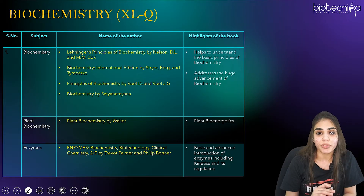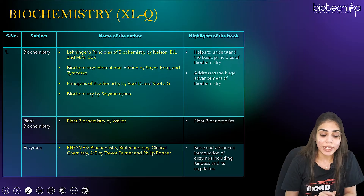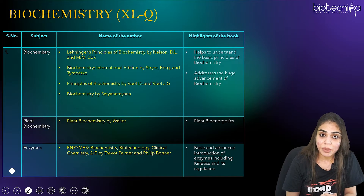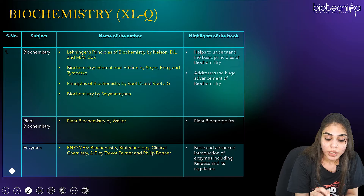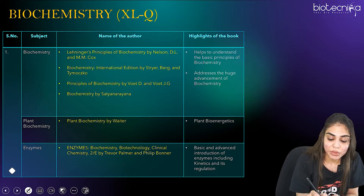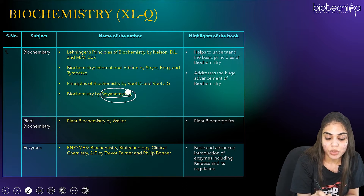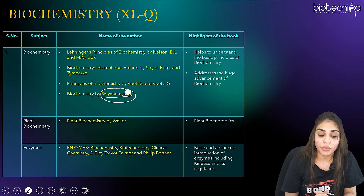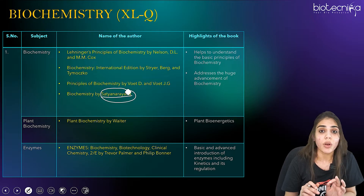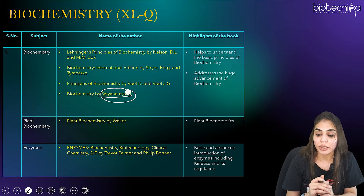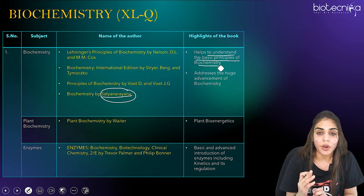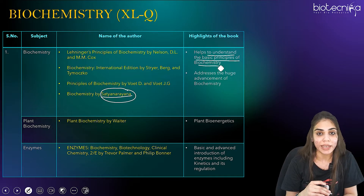For biochemistry, you can refer any one of the following reference books: Lehninger's Principles of Biochemistry by Nelson & Cox, Biochemistry international edition by Stryer, Principles of Biochemistry by Voet and Watt, or Biochemistry by Satya Narayan — an Indian author book. Any of these books will help you understand the basic principles of biochemistry and address the advancements in biochemistry as well.